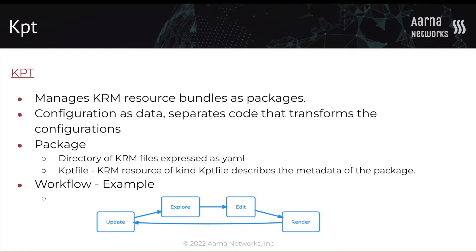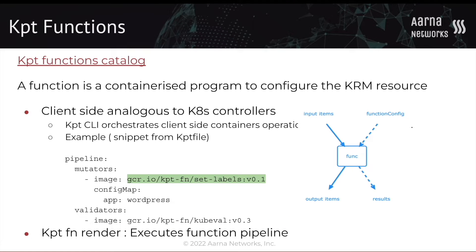A KPT package consists of KRM files which define the Kubernetes objects to be created. Along with that, there is a KPT file which is a KRM resource itself. This KPT file defines the metadata of the package and also defines a pipeline to mutate and curate the packages. The configuration of KRM resources is done by KPT functions, and the pipelines defined in the KPT files consist of these functions.